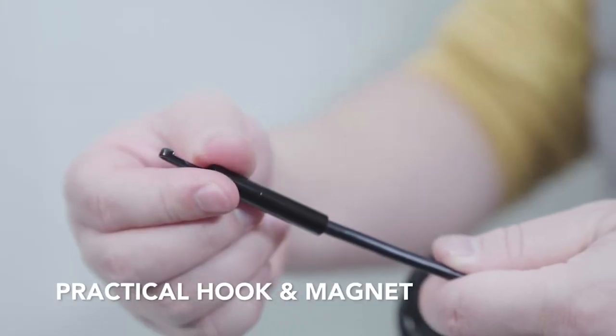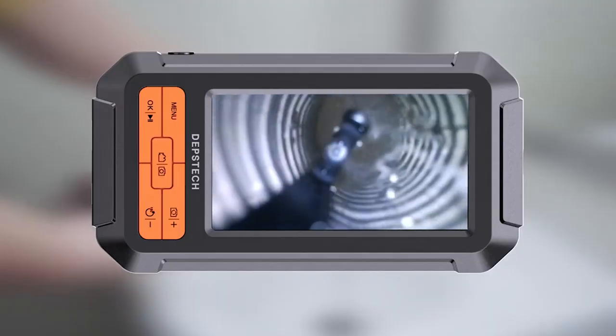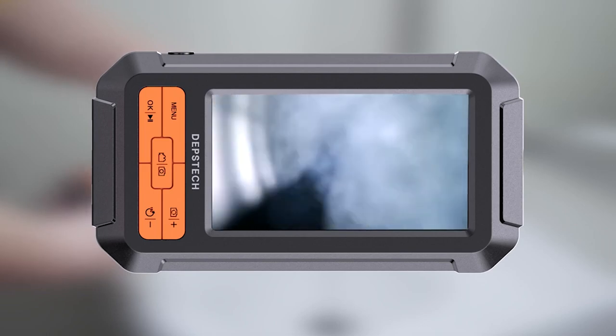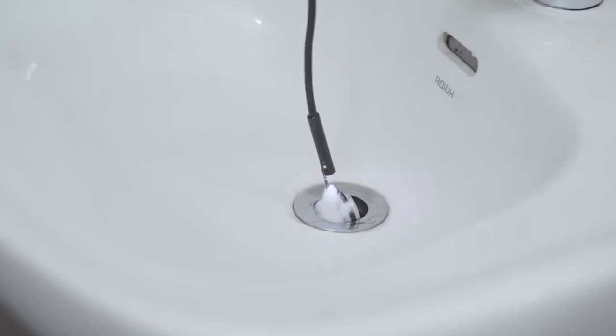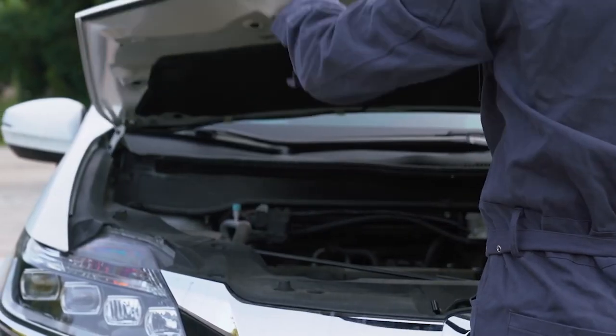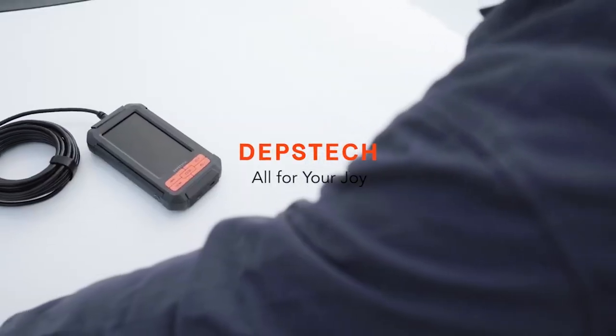Even in dark environments, the IPS Endoscope shines brightly. But wait, there's more. This gadget comes packed with handy accessories like a mirror, hook, and magnet. These additions make your inspection process extremely convenient.